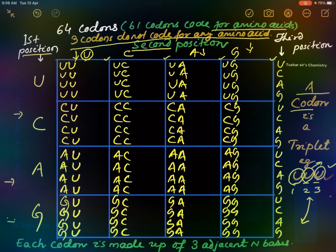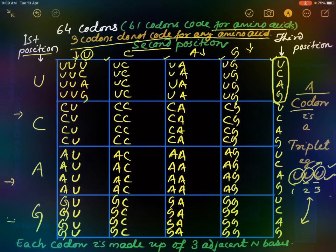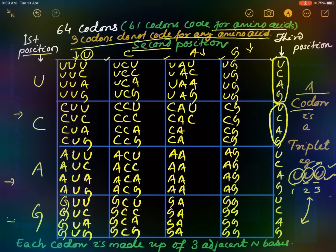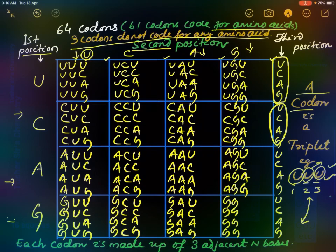Then for the third position, we have to write U, C, A, G repeating across all rows: U, C, A, G — U, C, A, G — U, C, A, G — U, C, A, G — continuing the full pattern through all sixteen cells per section.